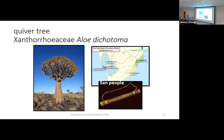Next up is the Quiver Tree — Xanthorrhoeaceae, Aloe dichotoma. If you have an aloe plant in your dorm room, this is our one tree-form aloe of the semester. It's called Quiver Tree because the indigenous San people would hollow out the limbs to make quivers for their arrows. There are several tree aloe species in this family — Aloe pillansii, Aloe ramosissima, Aloe barberae, Aloe tongaensis, and Aloe ecklonis further north — about half a dozen species in this genus.